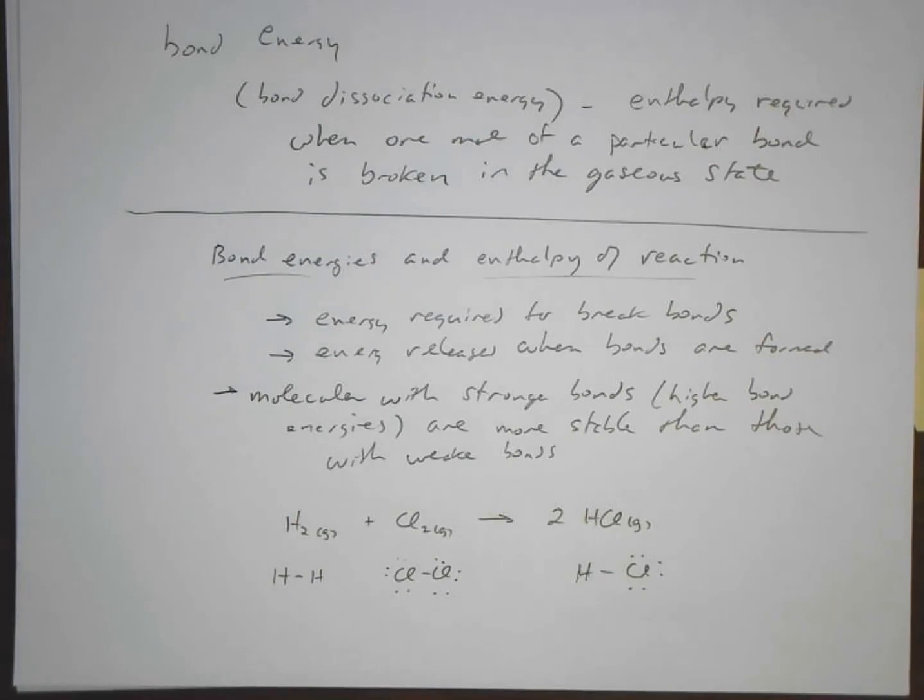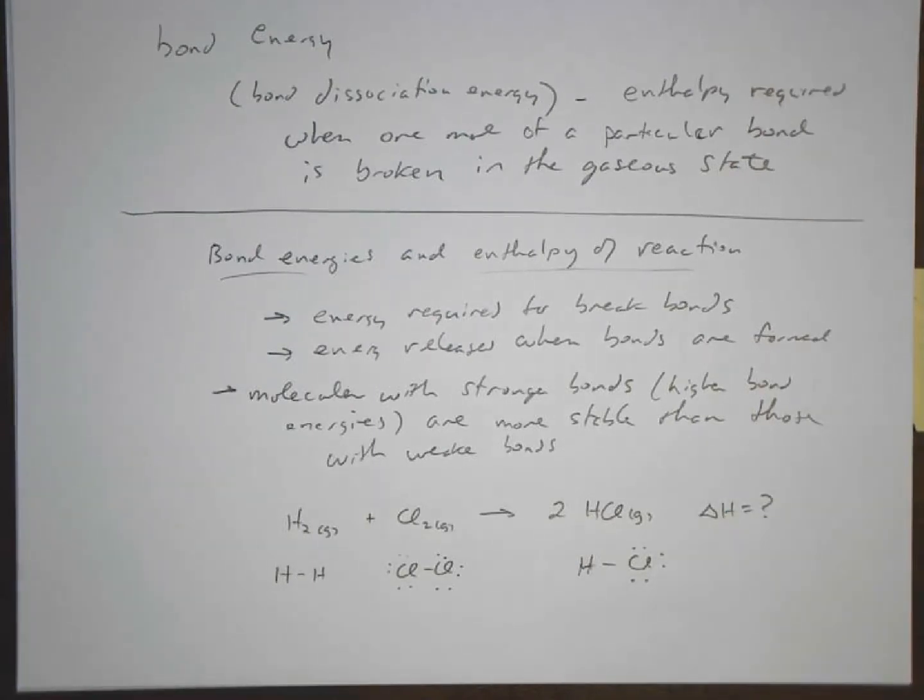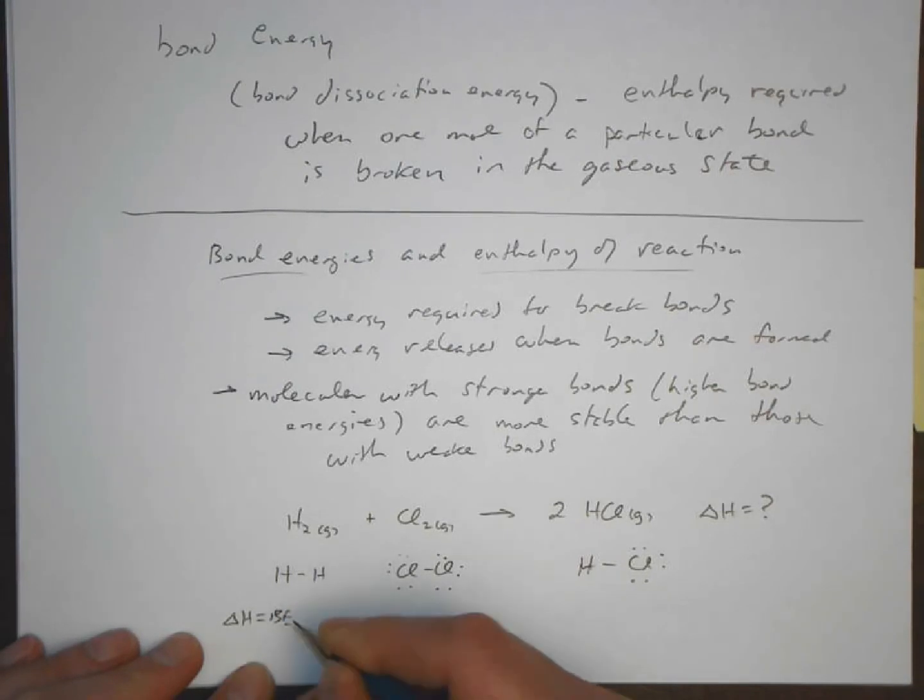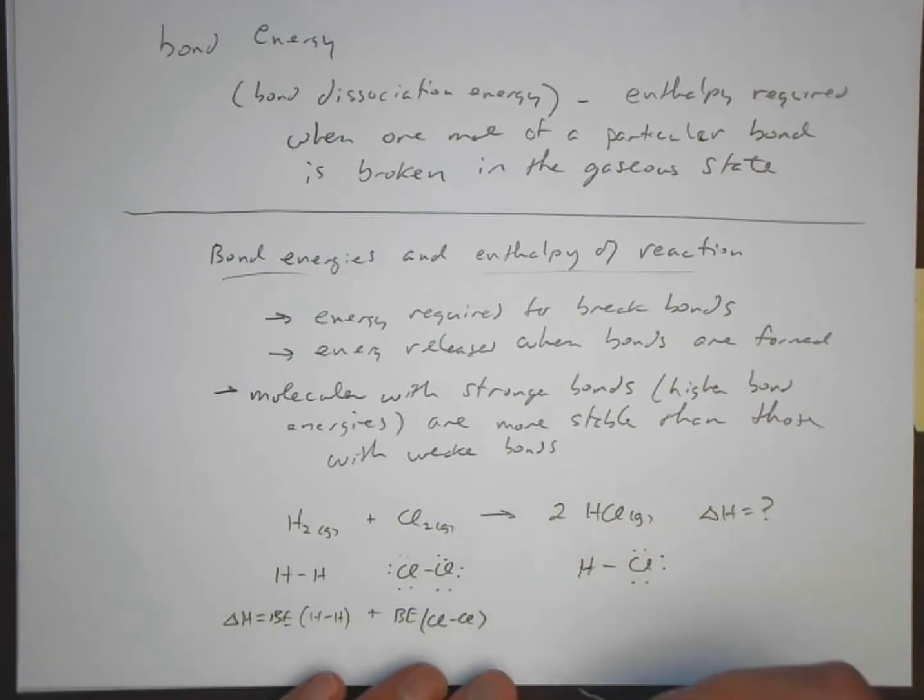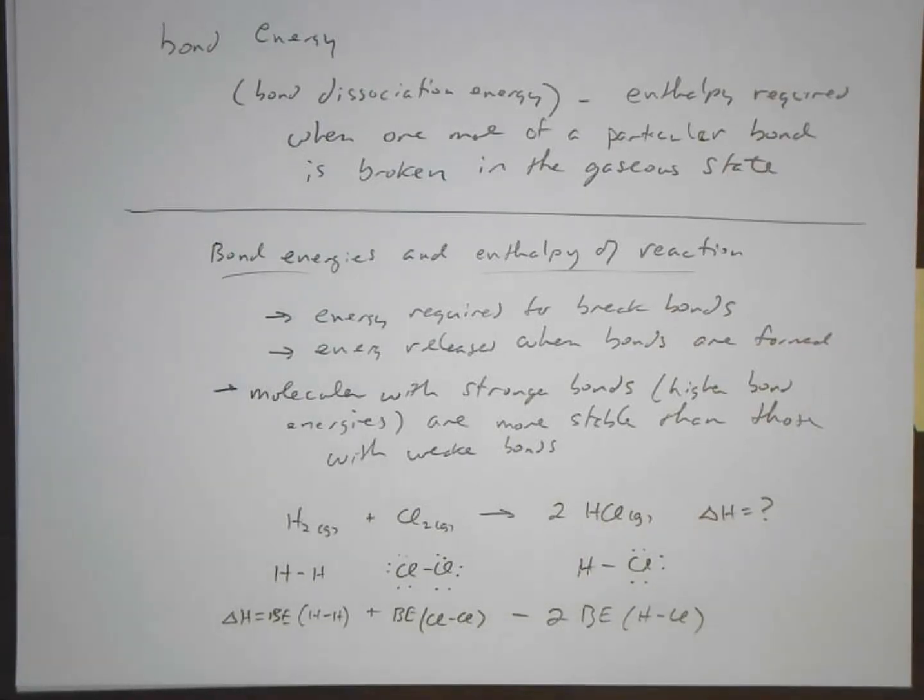Let's draw the Lewis structures for these molecules and look at how we might estimate the delta H for this based on the bond energies. Well, an estimate for the delta H would be equal to the bond enthalpy of a hydrogen-hydrogen bond plus the bond enthalpy of a chlorine-chlorine bond minus two times bond enthalpy of a hydrogen-chlorine bond.